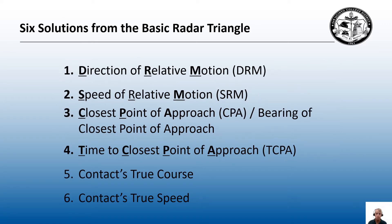The six solutions you will be able to derive from the basic radar triangle are: one, the direction of relative motion, or DRM; two, speed of relative motion, or SRM; three, the closest point of approach, or CPA, and the bearing of closest point of approach; four, the time of the closest point of approach, or TCPA; five, the contact's true course; and six, the contact's true speed.